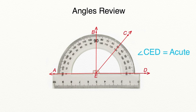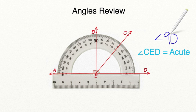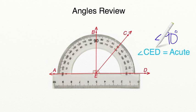Any time an angle has a value that is less than 90 degrees, it is going to be an acute angle. So angle C-E-D is an acute angle.